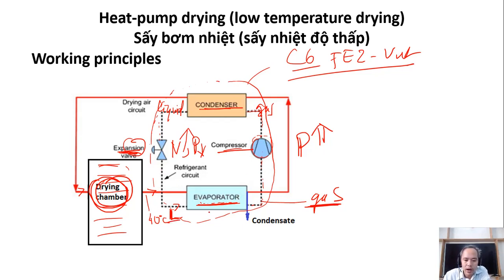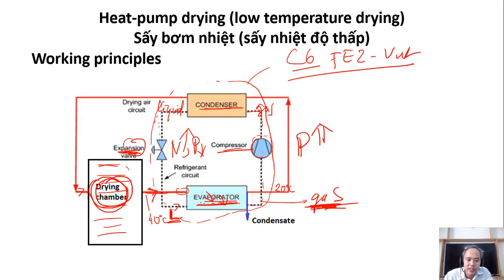In the evaporator, the liquid is converted into gas — this process is endothermic, meaning it absorbs energy; it needs energy to evaporate. We introduce the output air from the drying chamber to exchange heat with the evaporating refrigerant. The refrigerant takes energy from the output air to evaporate, so the temperature of the output air can drop down to maybe 20°C or 15°C, depending on the design.